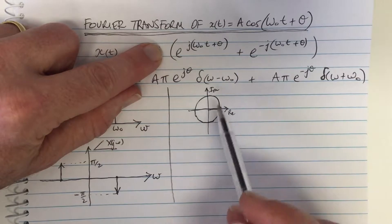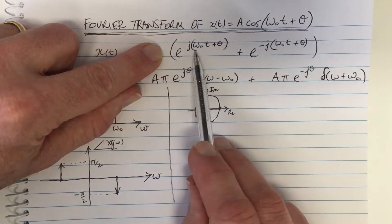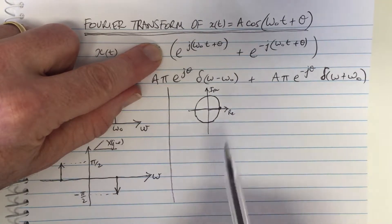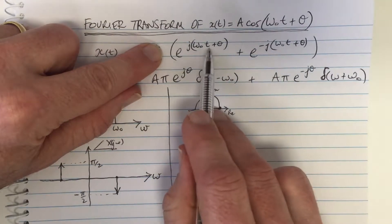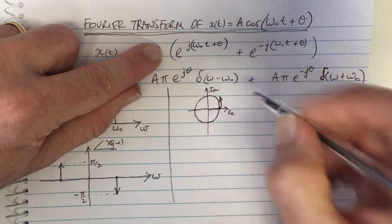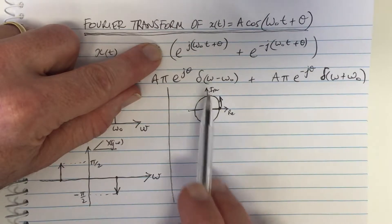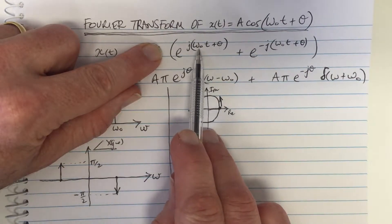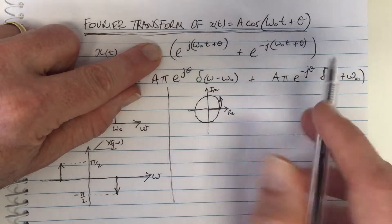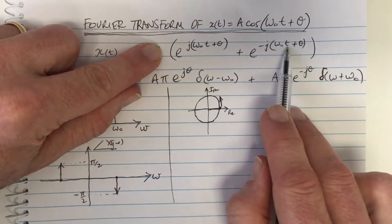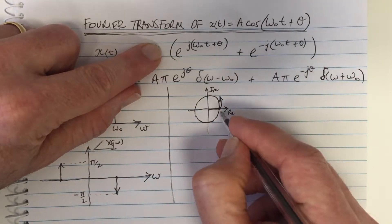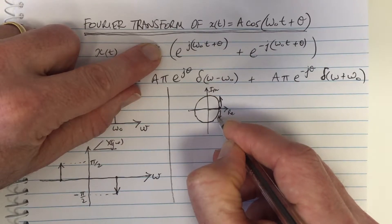When theta equals zero, this point starts at angle zero. As time goes up, this point is going to move around the circle at a rate given by omega_0. The other point, if theta equals zero, also starts at the same angle at time zero. But because of the negative frequency, it's going to move in the opposite direction around the circle.